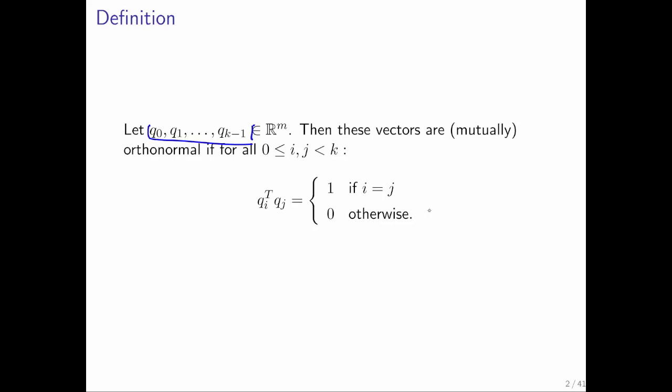We're going to say that these vectors are mutually orthonormal if for all i and j, the inner product of those two vectors is always 0, meaning they are orthogonal, except for the case where i and j are one and the same, in which case the dot product equals 1.